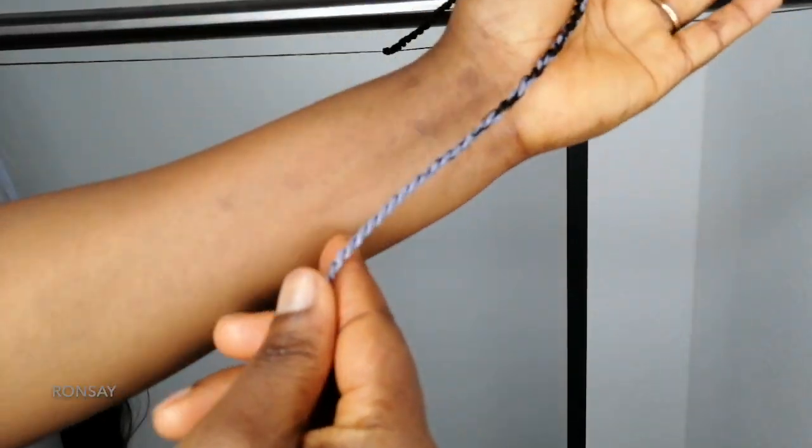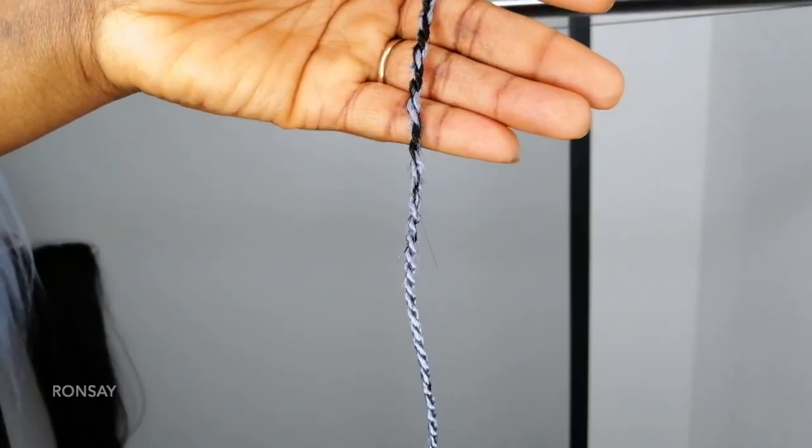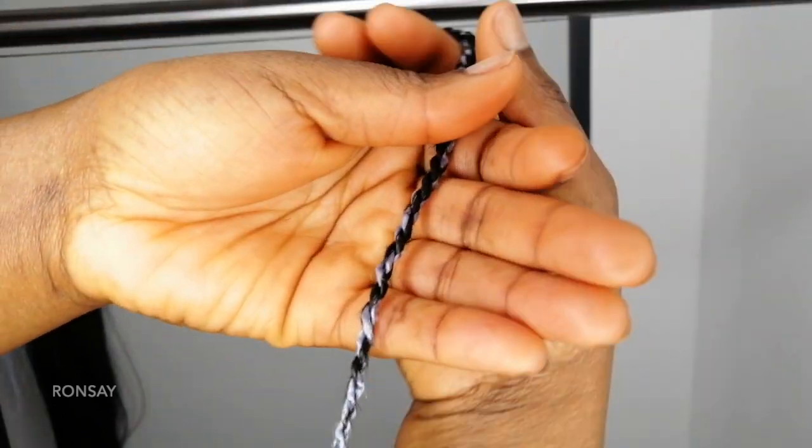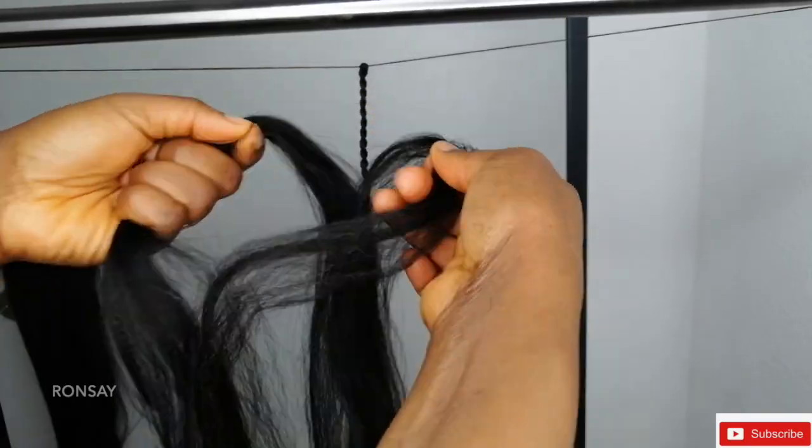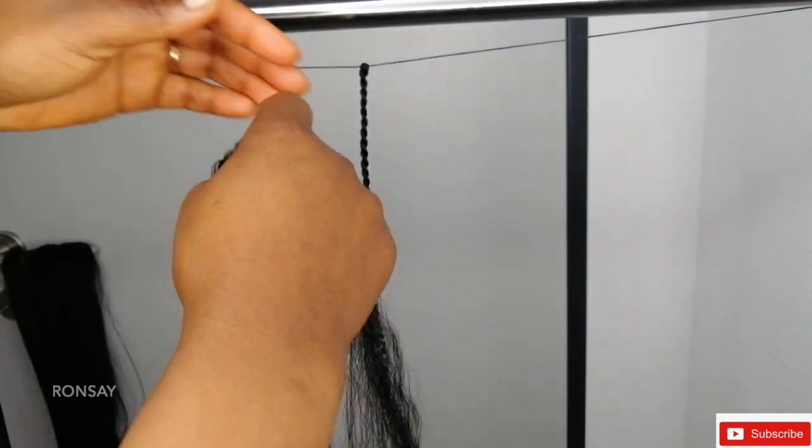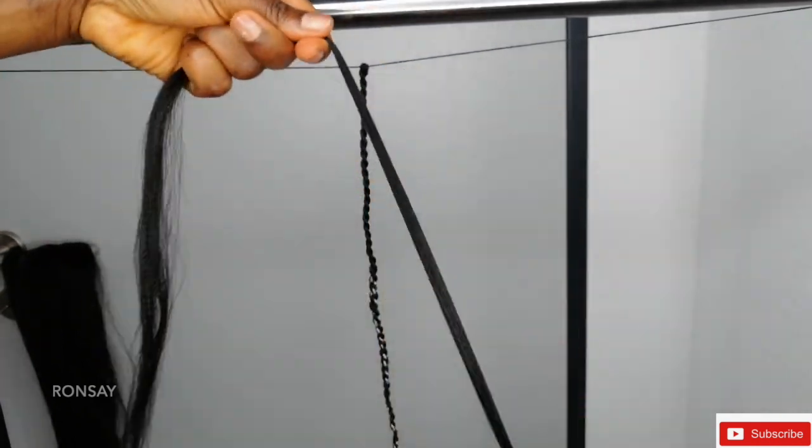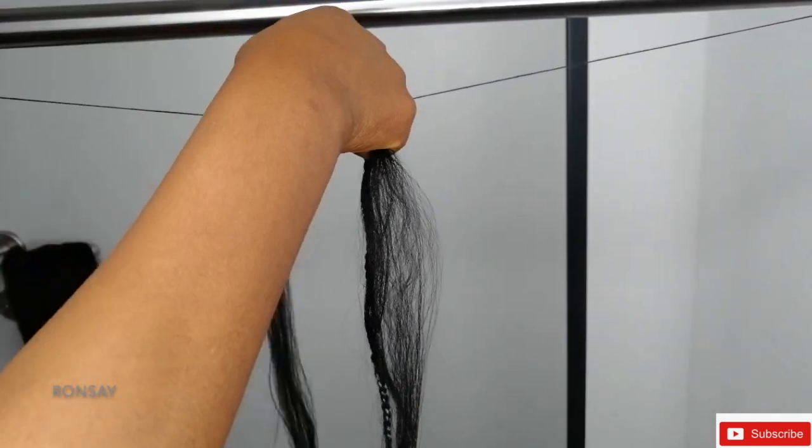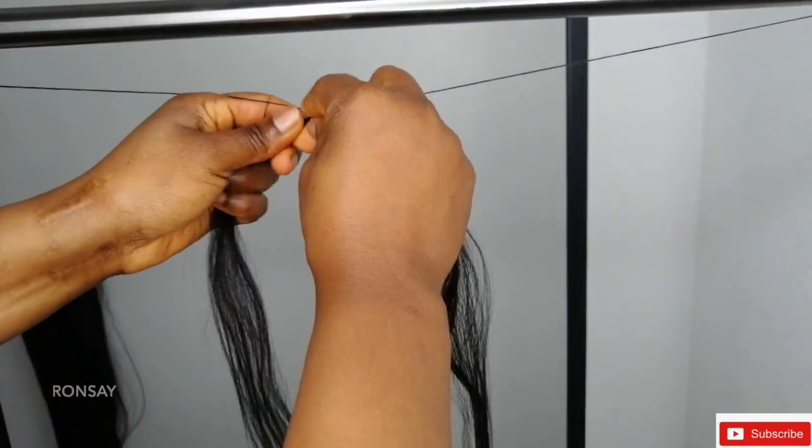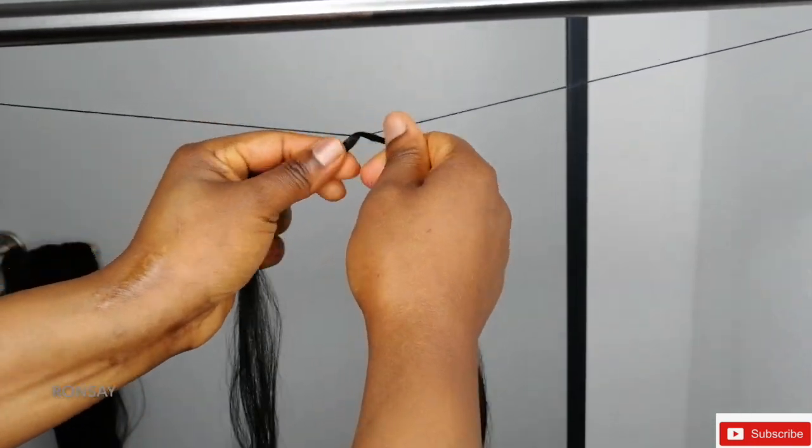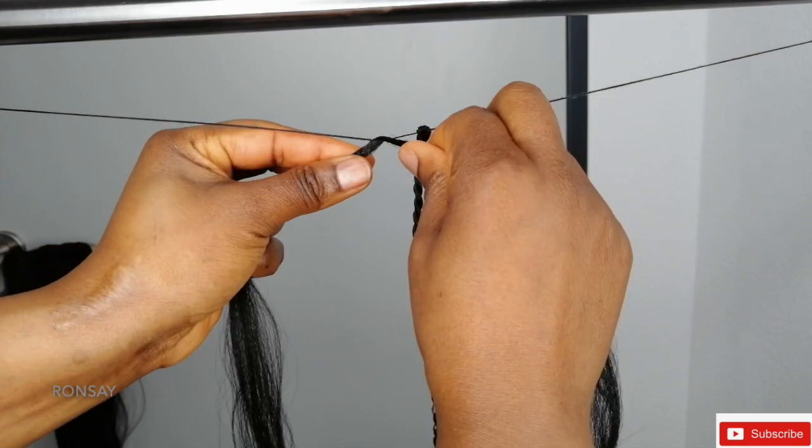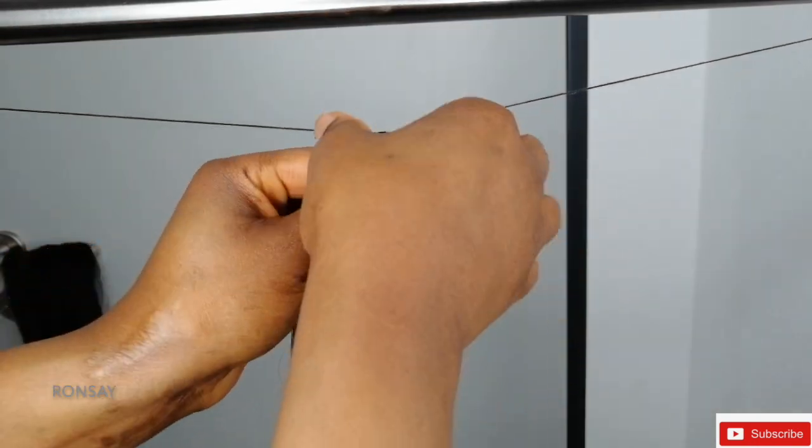Once you're done with the twist and wrap to the end, this is what your twist should look like. So you have the color that is black on the top and then the bottom. It's like gray but not really gray, the hair, but I'm definitely gonna put the number of this hair color in the description box below. I'm going to do it again just so you can take a closer look.